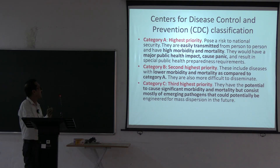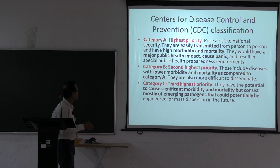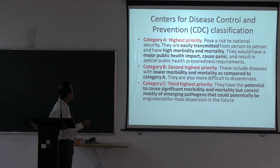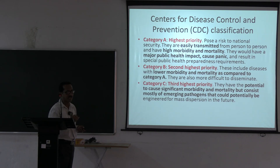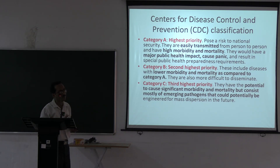The CDC (Centers for Disease Control, USA) has divided biological weapons into three categories. Category A agents can be easily transmitted, cause high morbidity and mortality, and have a major public health impact causing panic. Category B agents have lesser morbidity and mortality than Category A but also cause panic and are more difficult to disseminate.